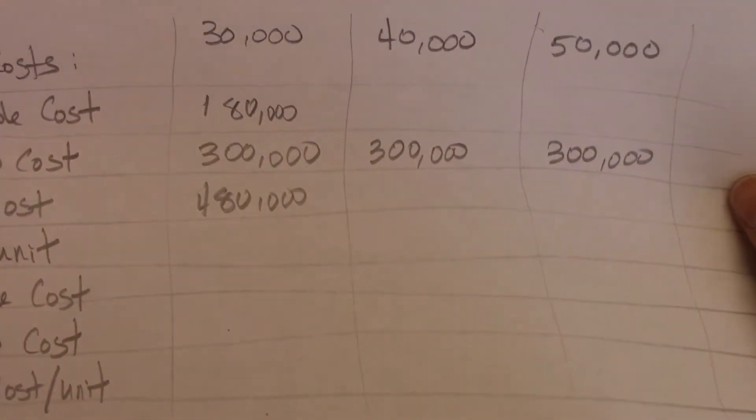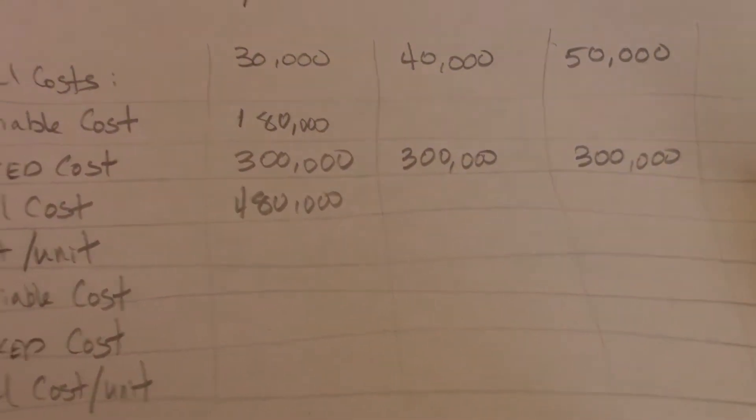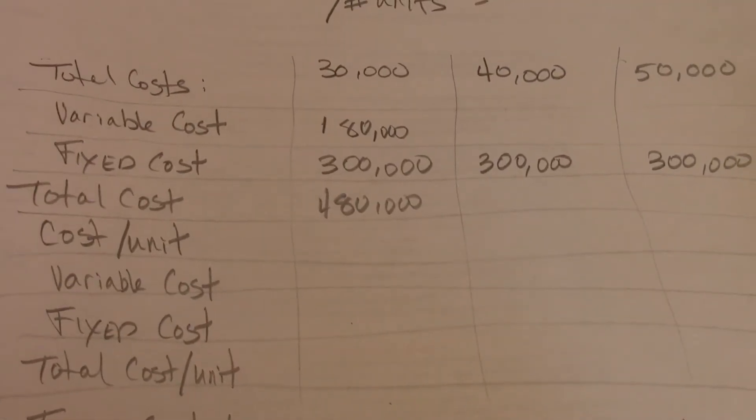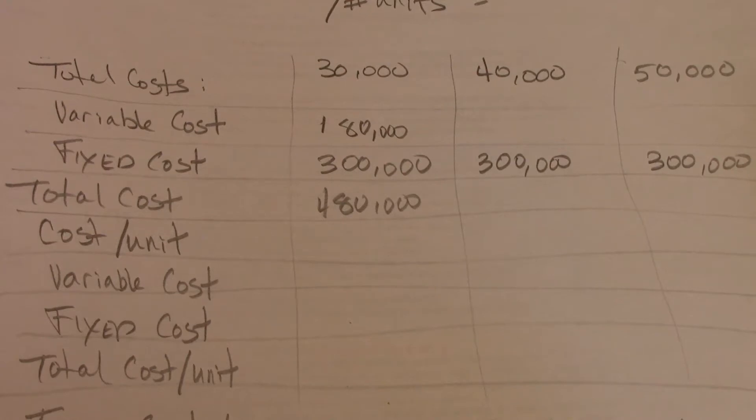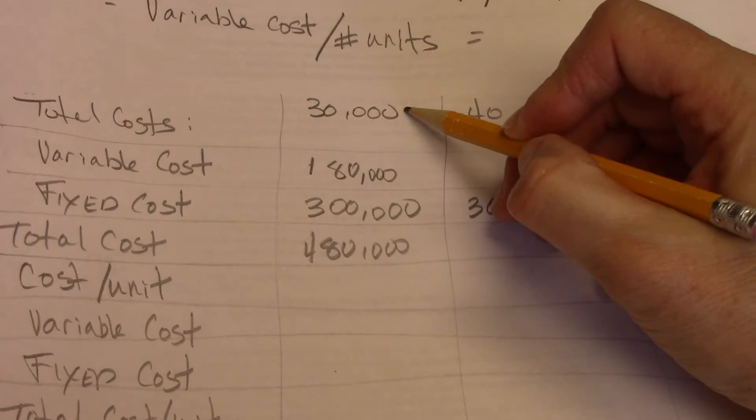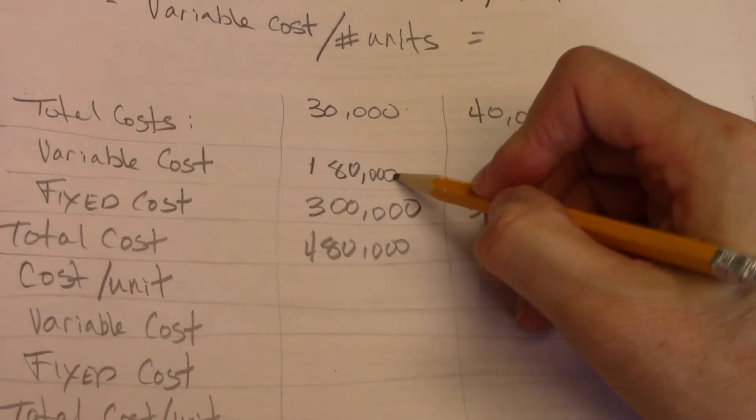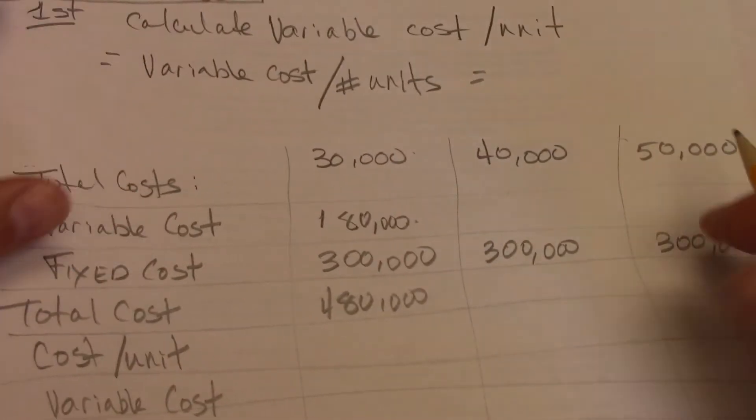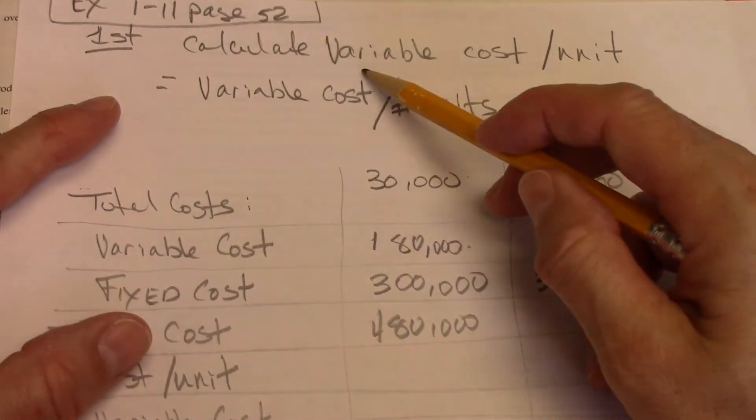Now I need to know variable costs. Well, the variable cost stays the same. Every unit I make has the same variable cost, but I need to figure out what's the cost per unit. So I know if we make $30,000, the variable total cost is $180,000.